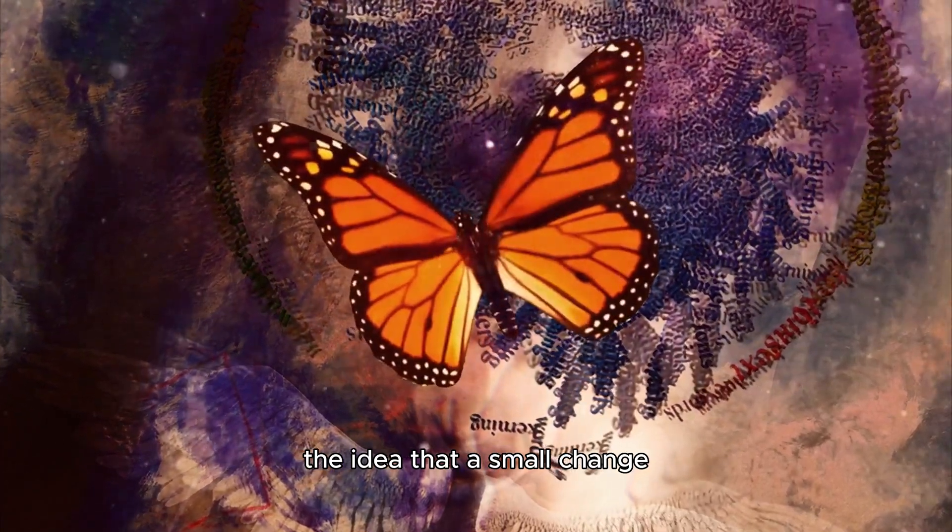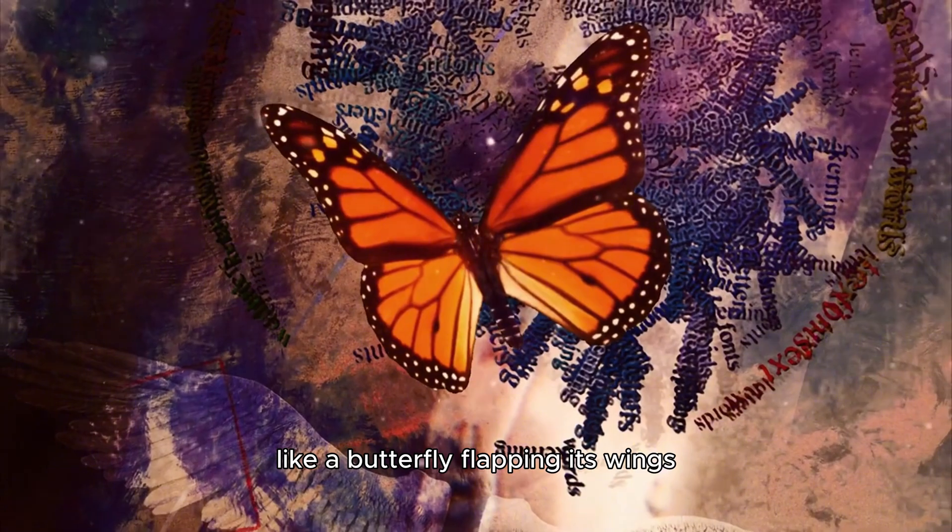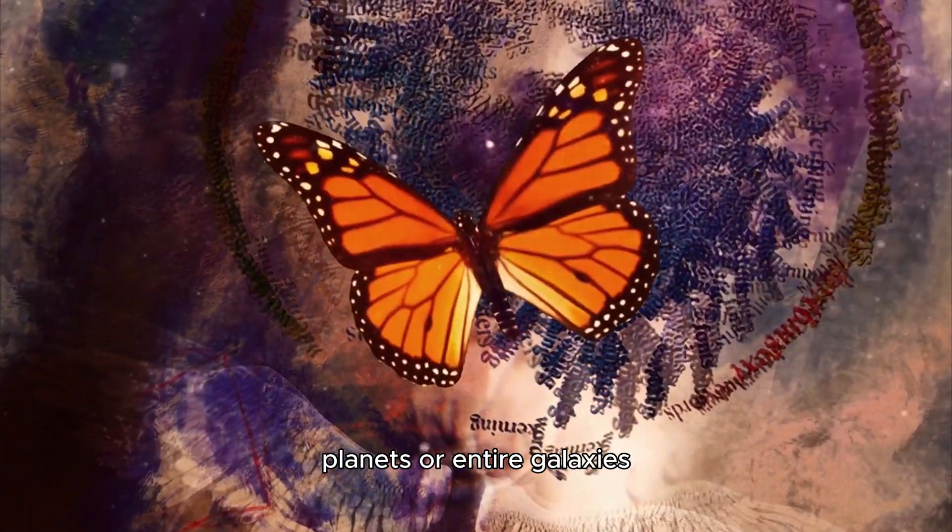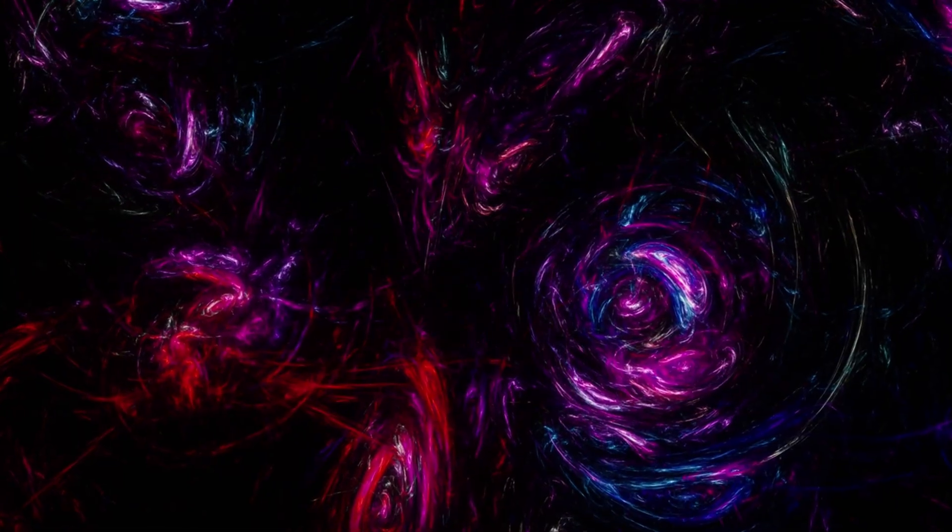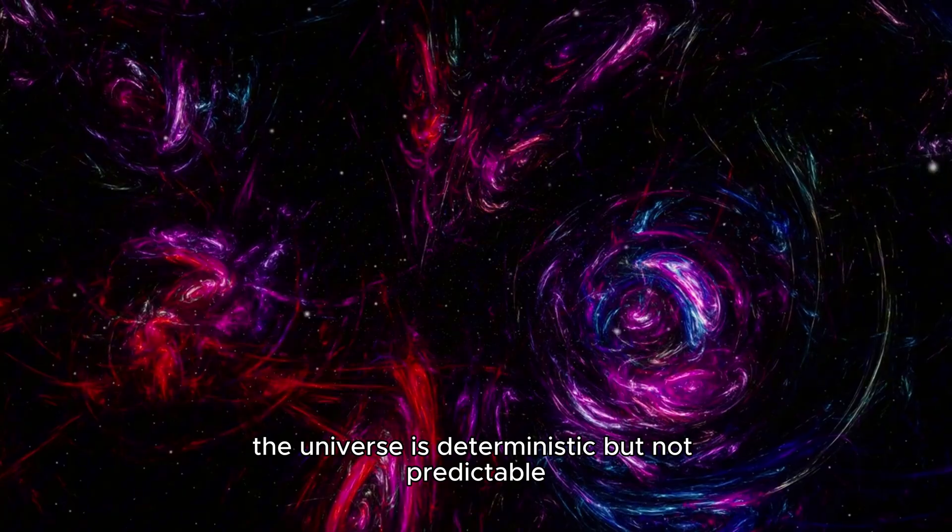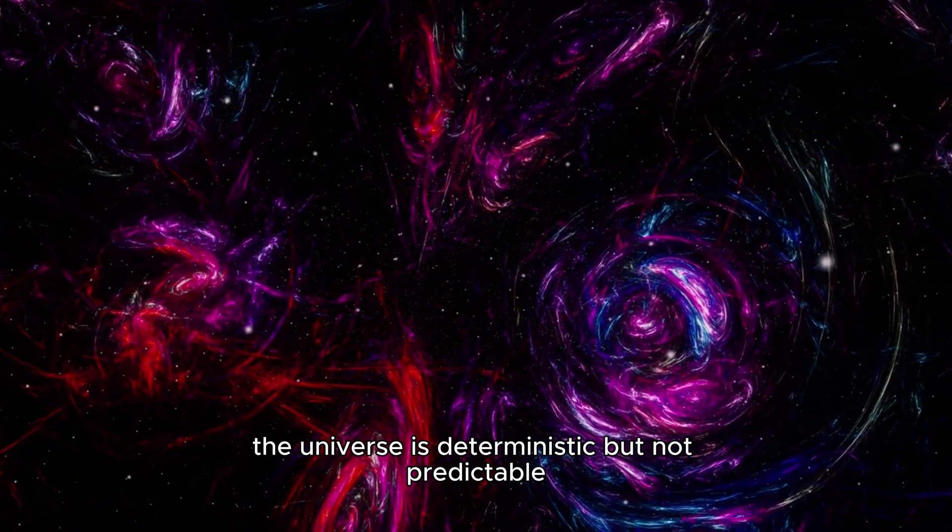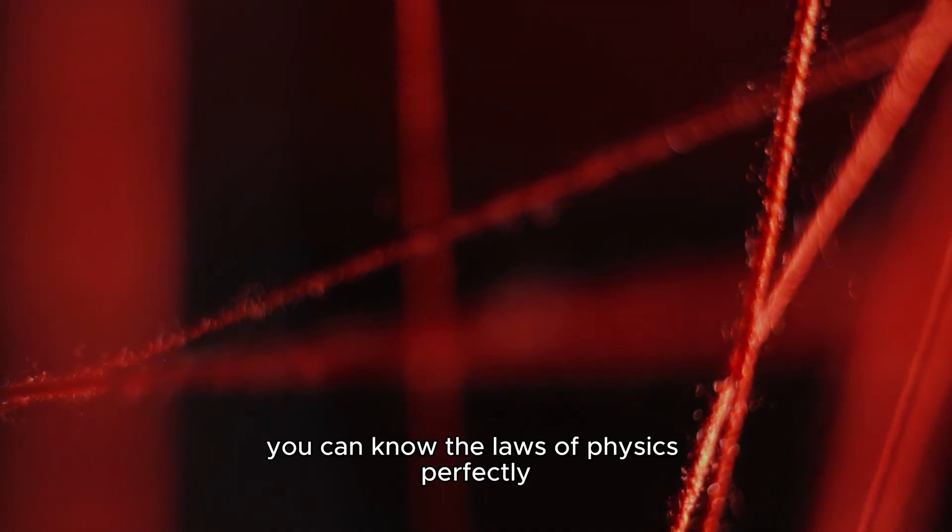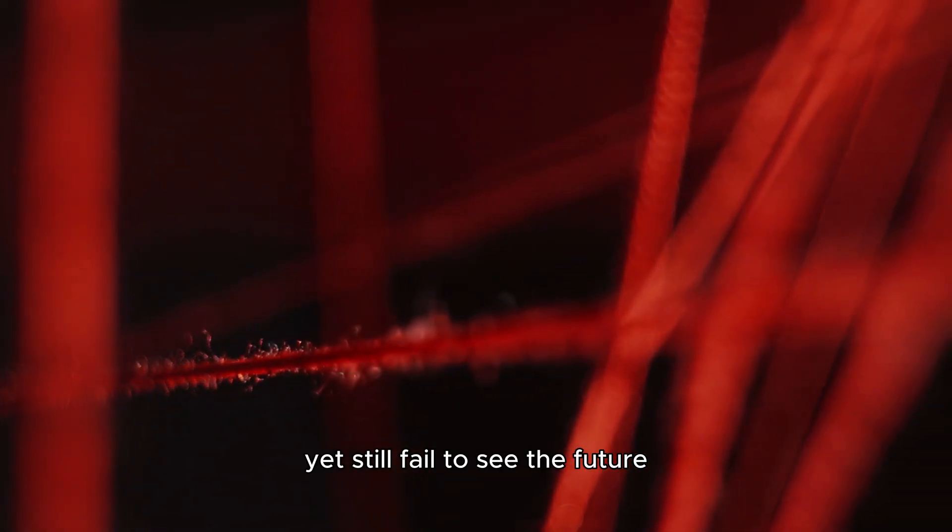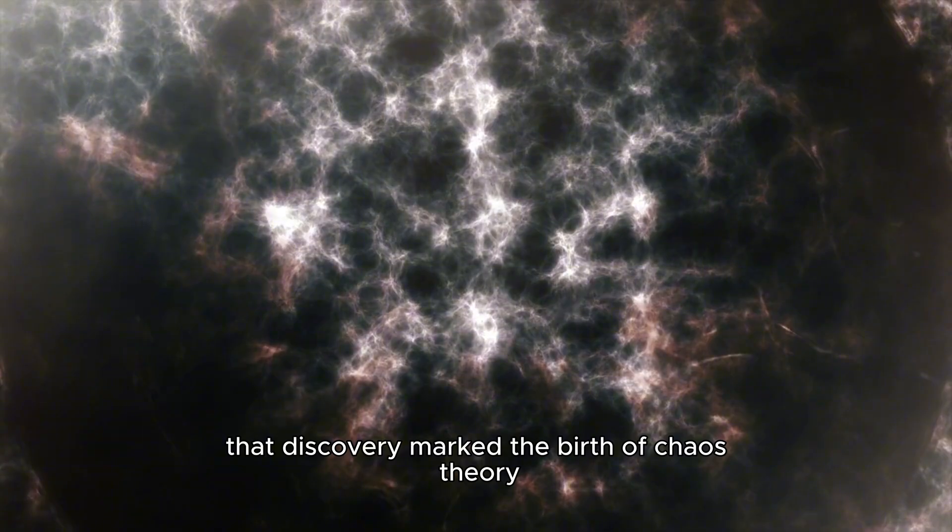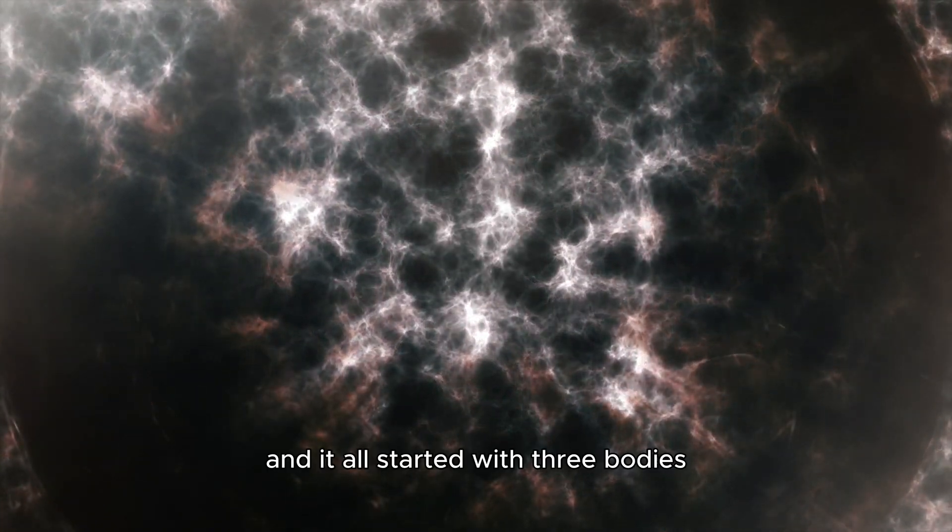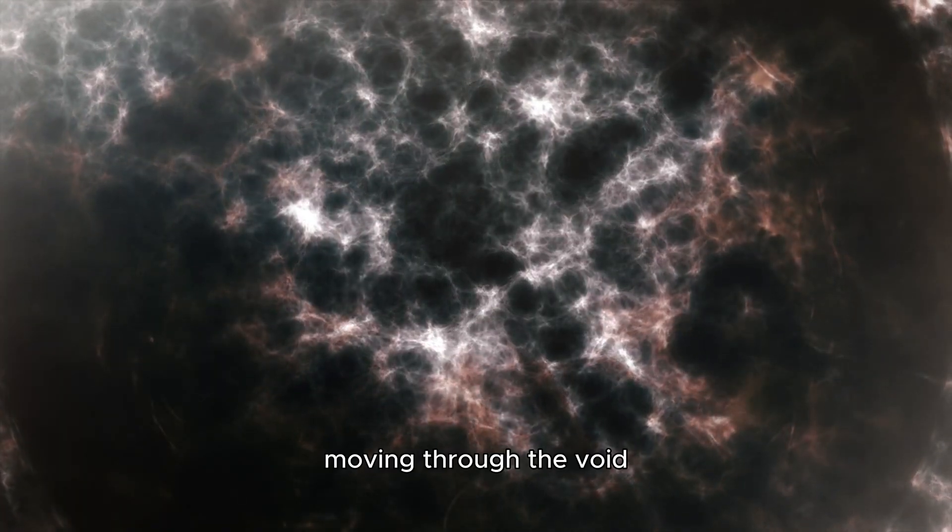This became known as the butterfly effect. The idea that a small change, like a butterfly flapping its wings, could alter the course of hurricanes, planets, or entire galaxies. Poincaré realized something profound. The universe is deterministic, but not predictable. You can know the laws of physics perfectly, yet still fail to see the future. That discovery marked the birth of chaos theory. And it all started with three bodies moving through the void.